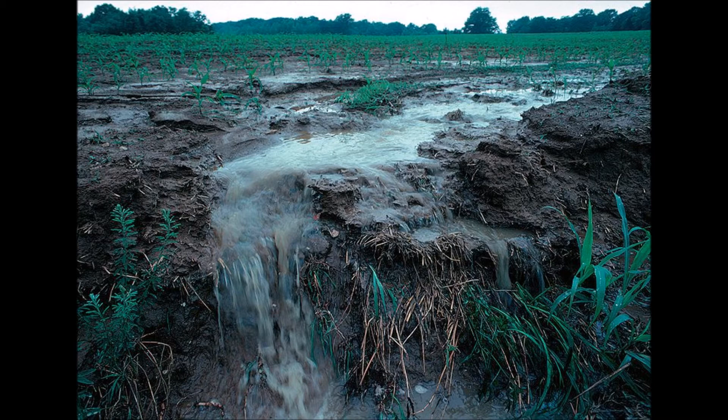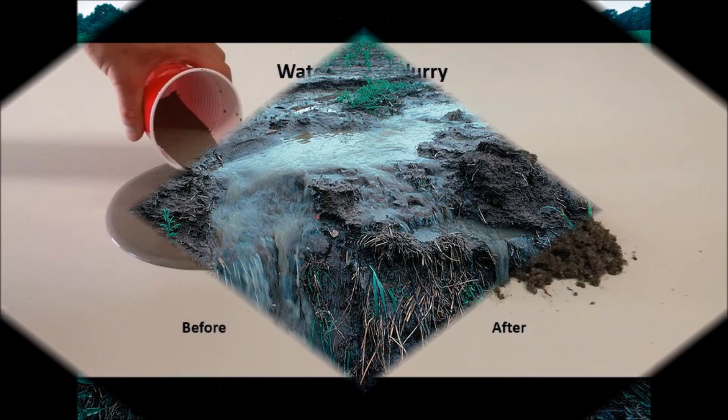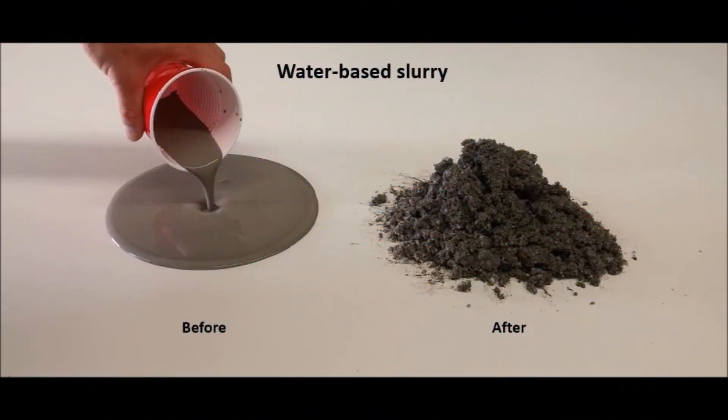Latosol is a tropical zonal soil developed in response to tropical and equatorial climates. These climates have up to 6,000 millimeters of rainfall per annum, which causes leaching and rapid humification. Latosols are rich in aluminium, iron oxides, and organic matter.